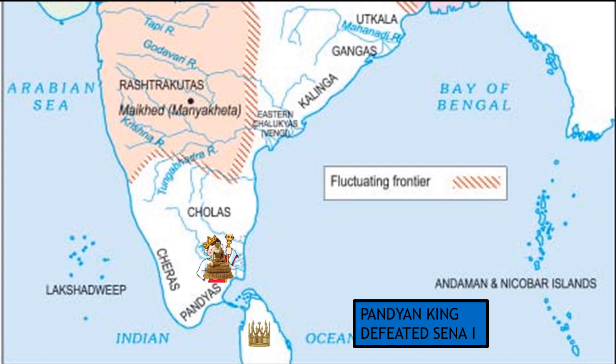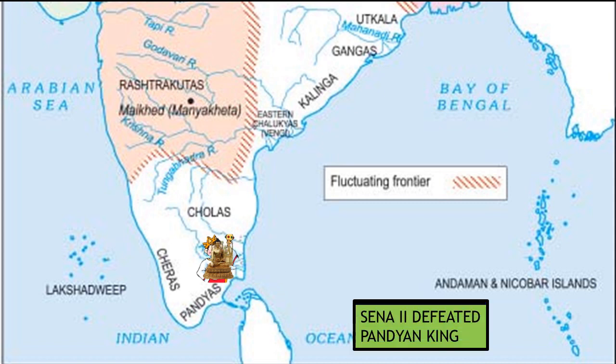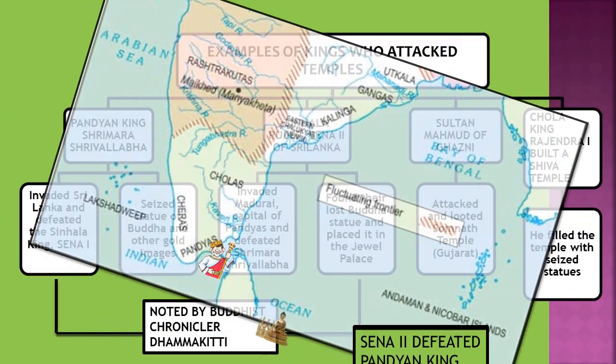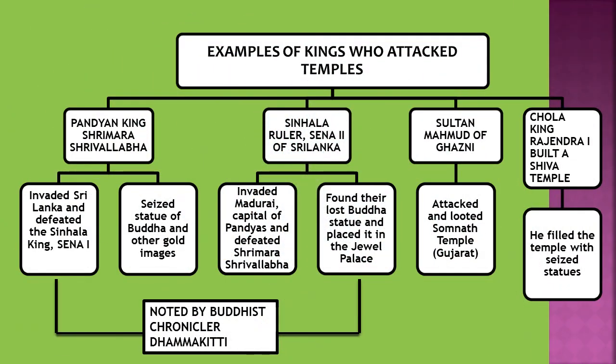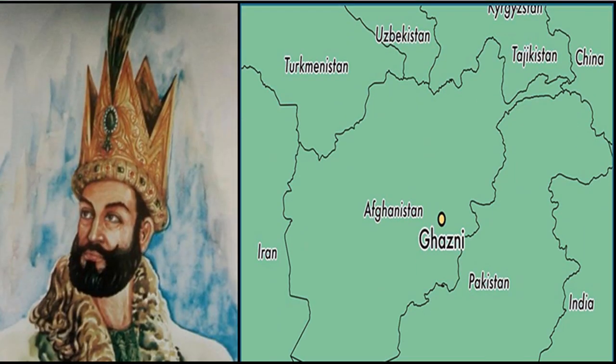After some years, the ruler in Sri Lanka changed. The new ruler was Sena II, who was the nephew of Sena I. Sena II sent his general to India, where he defeated the Pandyan king Srimara Shrivalabha and brought the gold statue of Buddha back to Sri Lanka. All this was noted by the Buddhist chronicler Dhammakiti. The Sri Lankan ruler is also referred to as the Sinhalese ruler, as Sinhala is the main language of Sri Lanka.